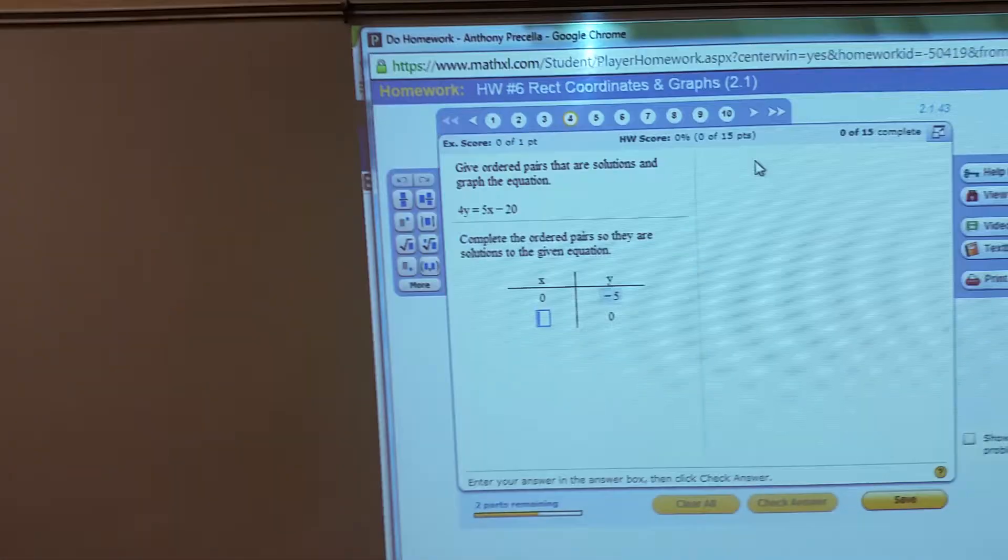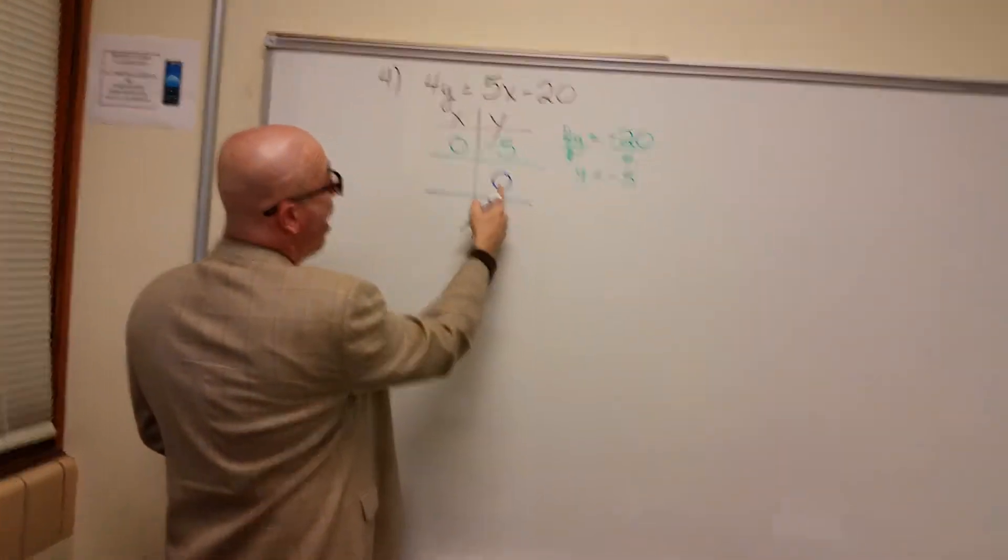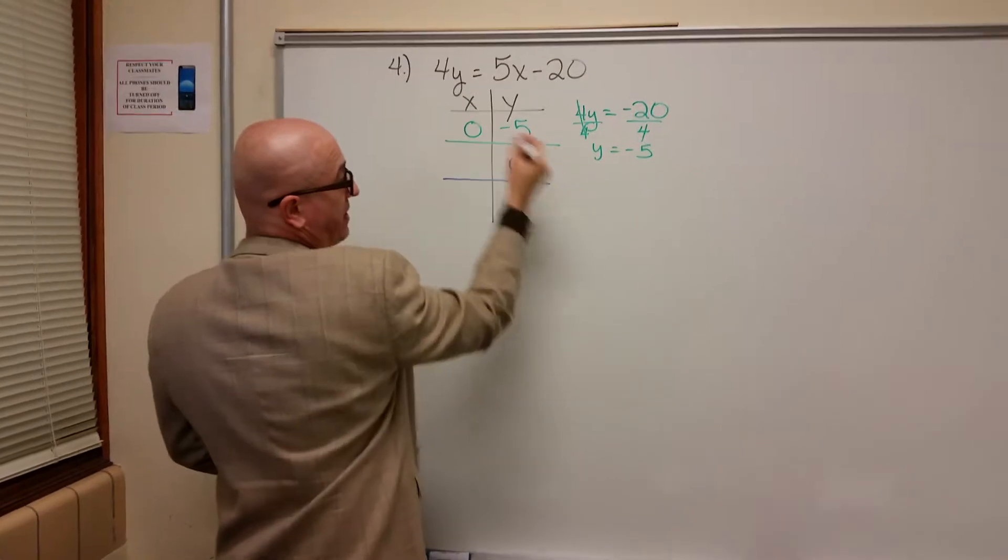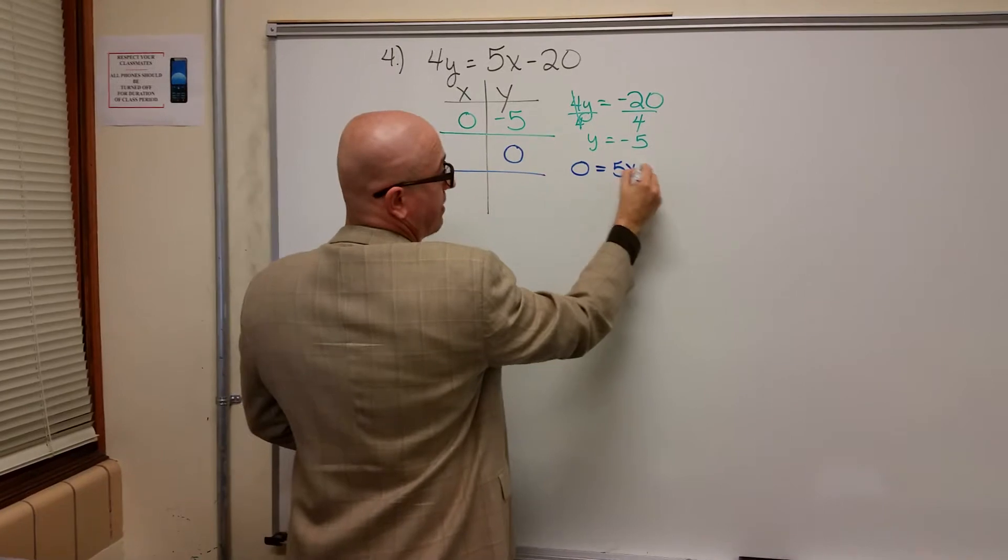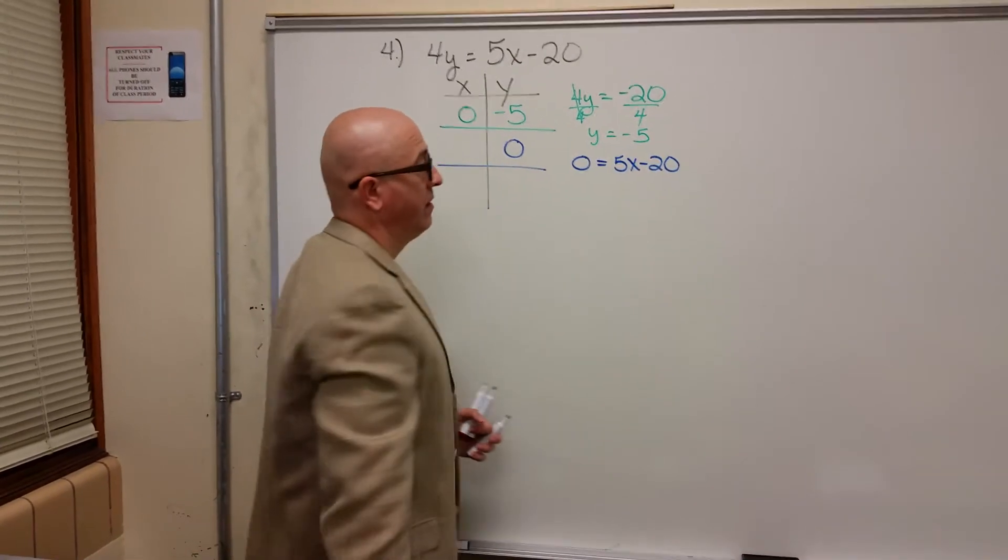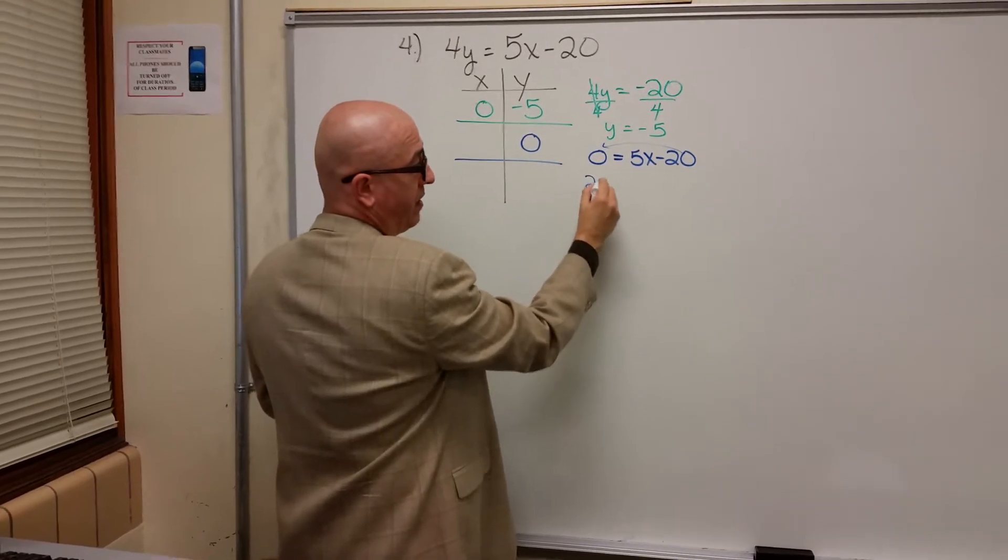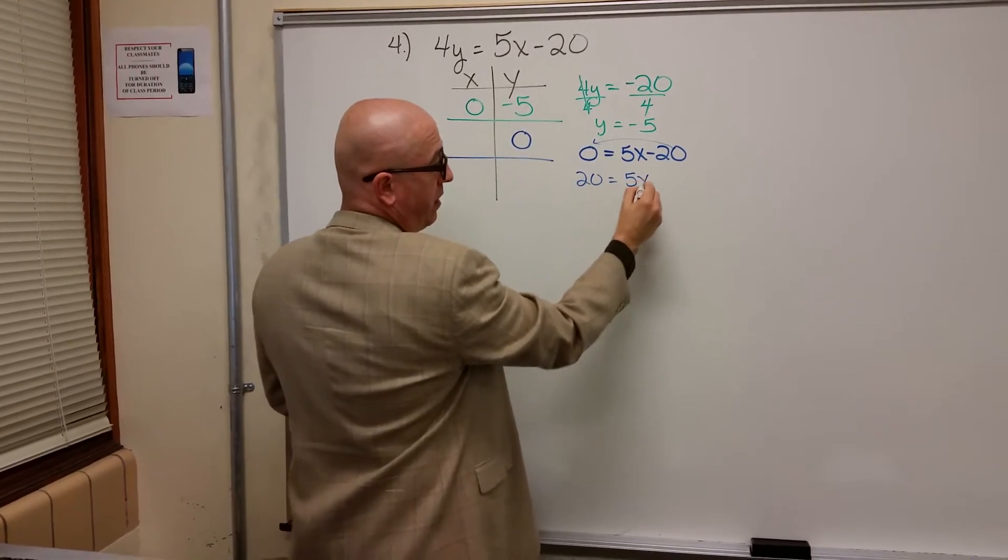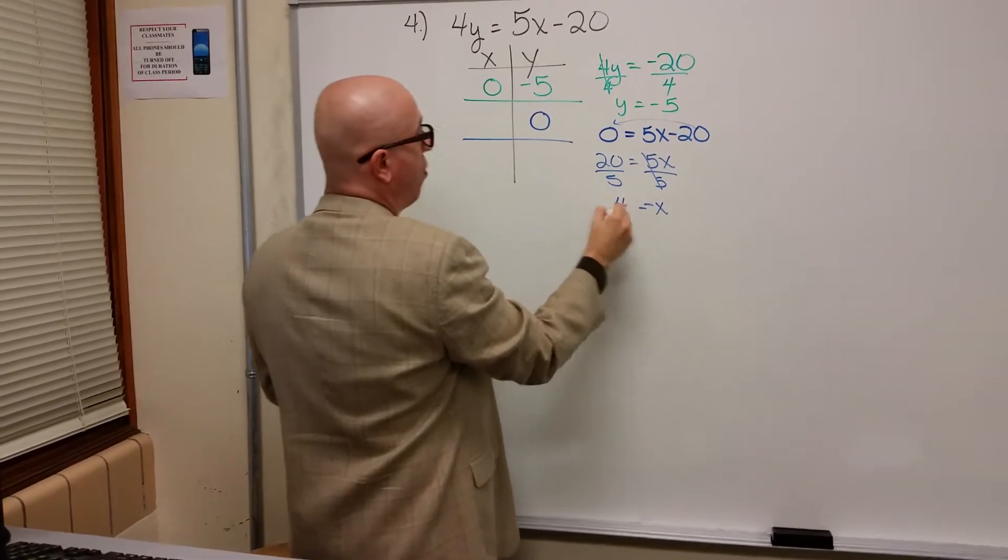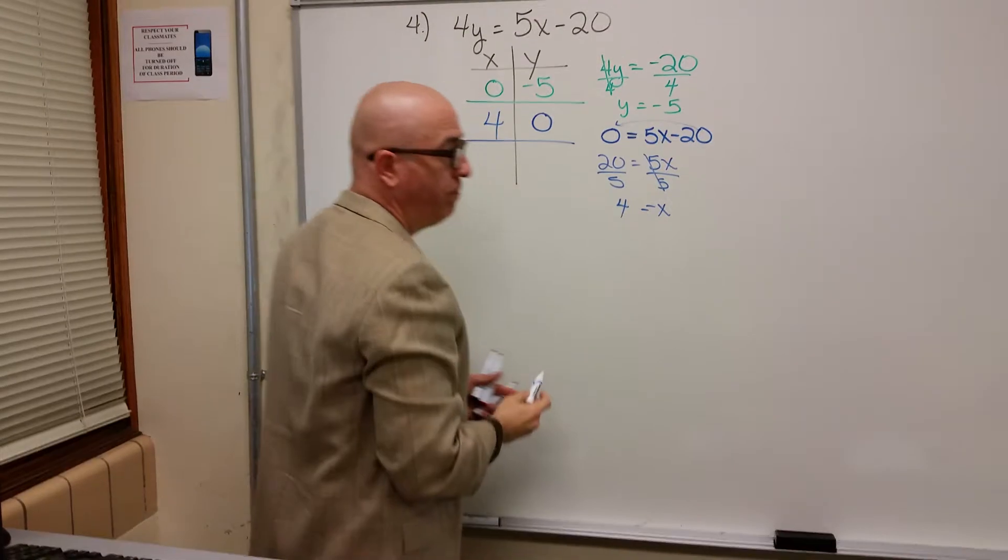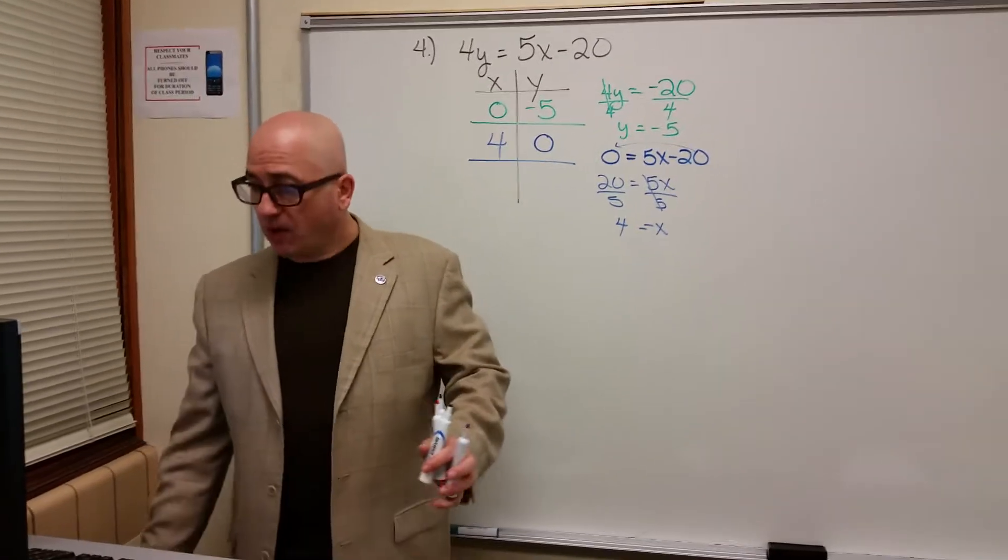And now it's giving us another line on the x, y table. Here it says plug a zero in for y. If I plug a zero in for y, 4 times 0 equals 5x minus 20. I need to figure out x, so add 20, divide by 5, and we'll get x equals 4.